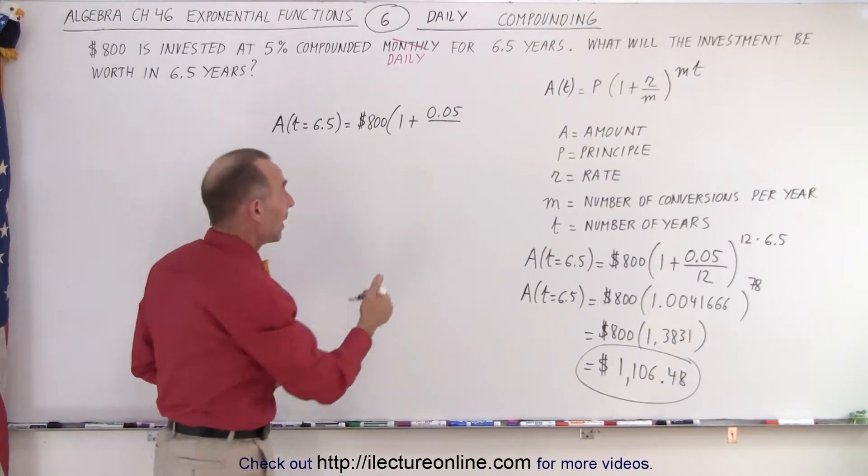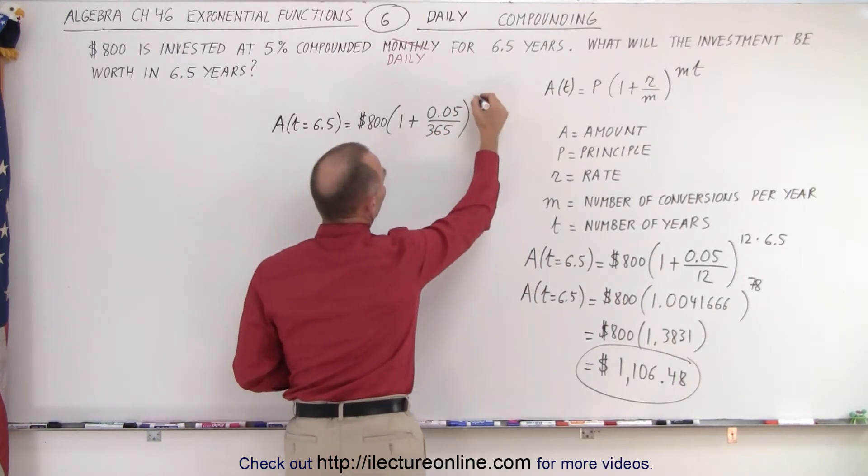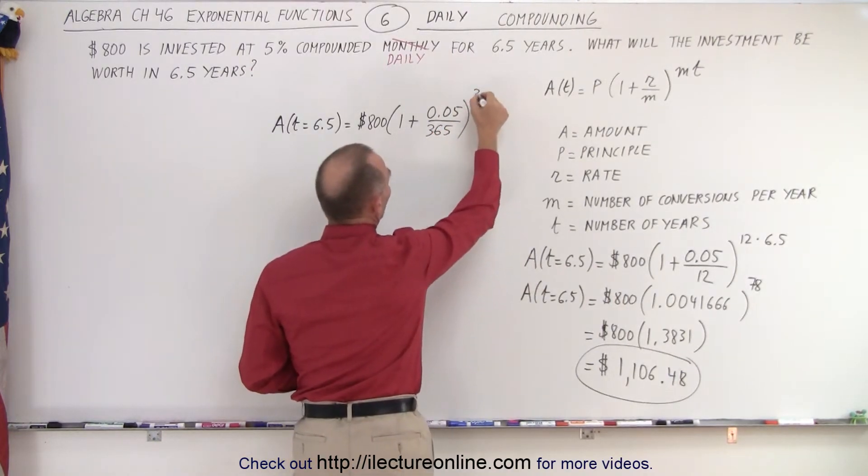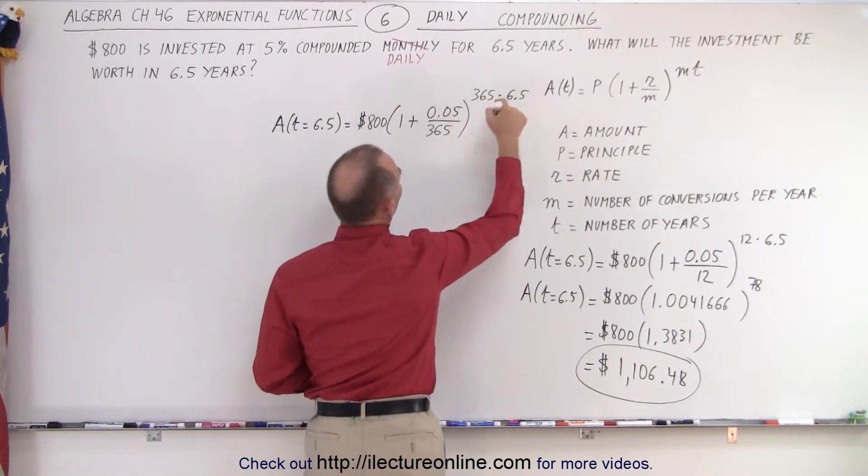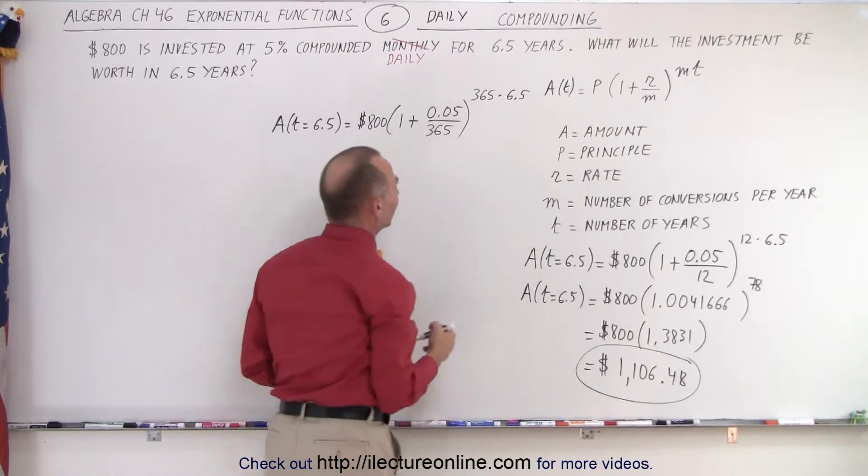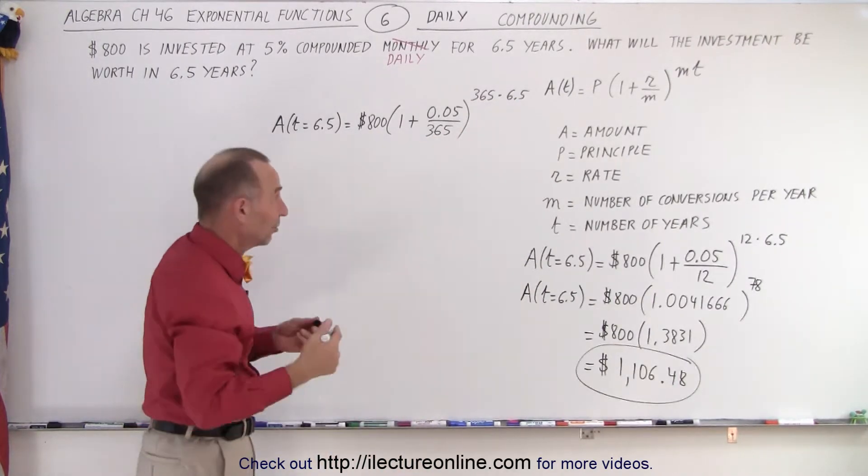Well, if it's daily compounding, we do that 365 days in a year, and then we have to multiply that or take the exponent, 365 times 6.5. So the number of days in a year times 6.5 years, the number of conversions per year, if we do it daily, it's 365.